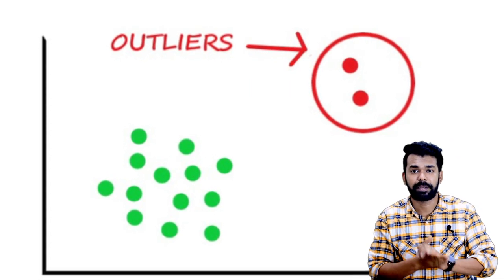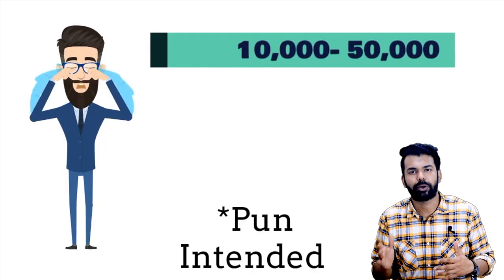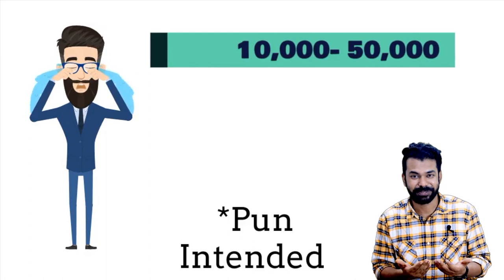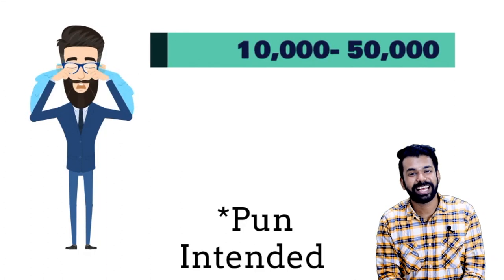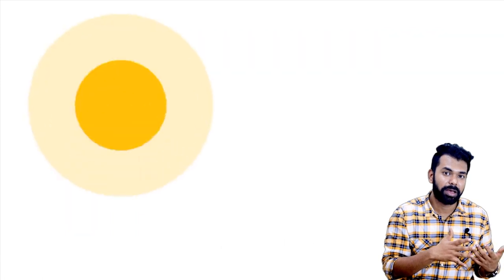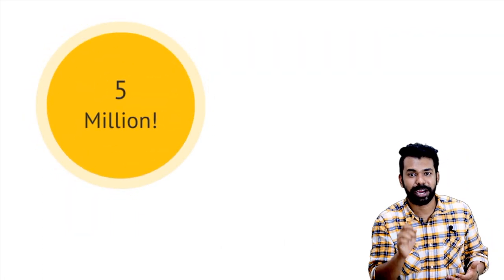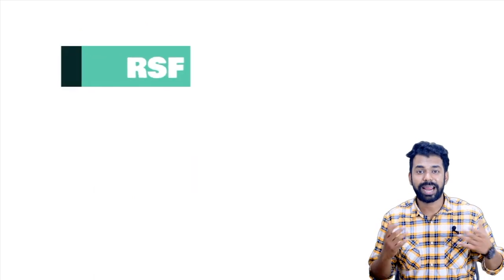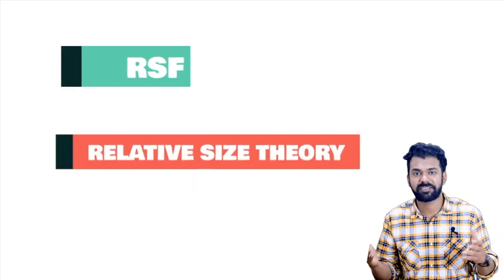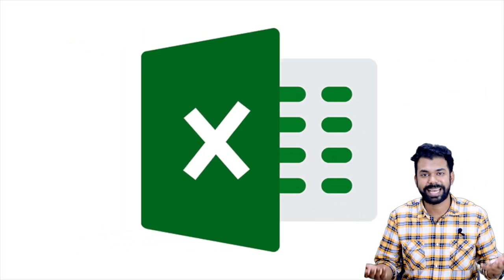For example, in my account, the amounts range around 10,000 to 50,000. Suddenly, if there is an amount of 5 million in my account, it would be of ordered interest — it would be an outlier. So let us understand the RSF factor theory and how it is applied in Excel.